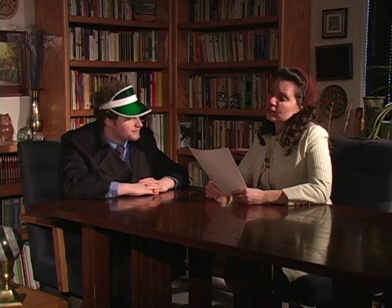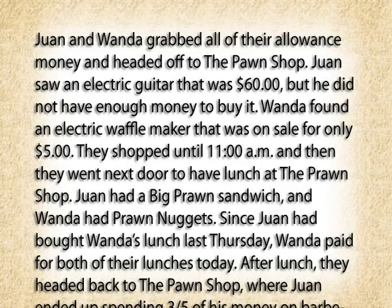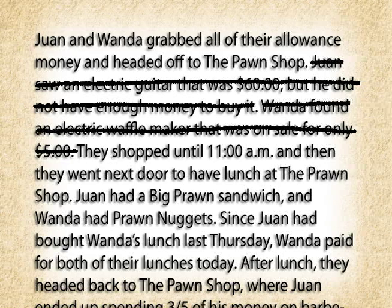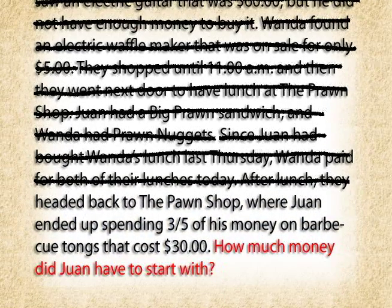Now the next thing we need to do is get rid of all the confuzzling information. I'll do it this time so you can learn how. We don't need to know about what they looked at at the pawn shop, like the electric waffle maker or the guitar, and we don't need to know where they went to lunch or who even bought lunch. But what's important is that Juan spent $30 and that that was three-fifths of his money.